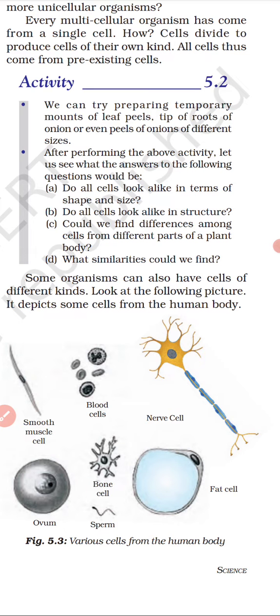Roots perform different functions, so their cells will also be different. Similarly, collenchyma, sclerenchyma, xylem cells, phloem cells - we can find differences among cells from different parts of a plant body.